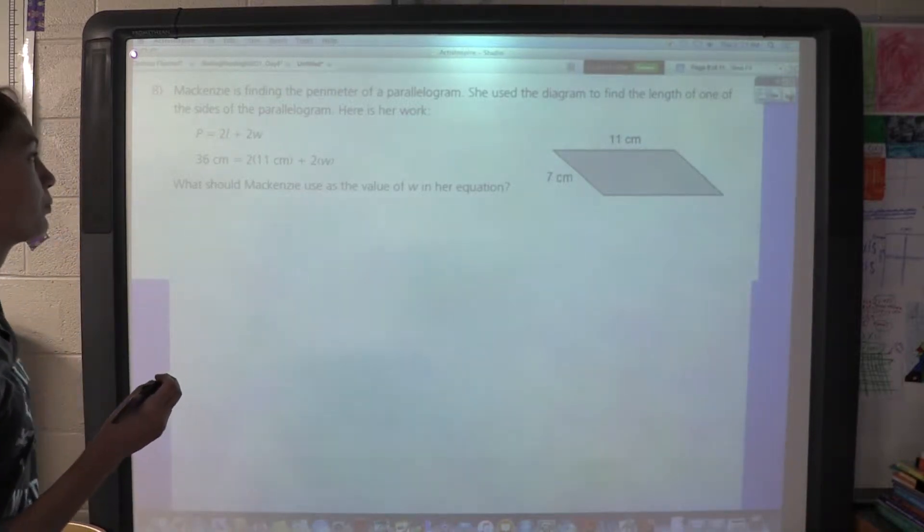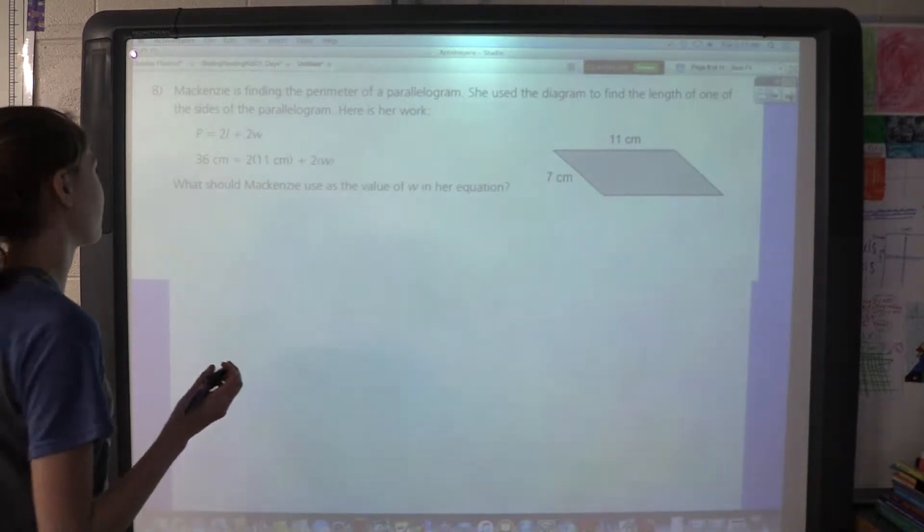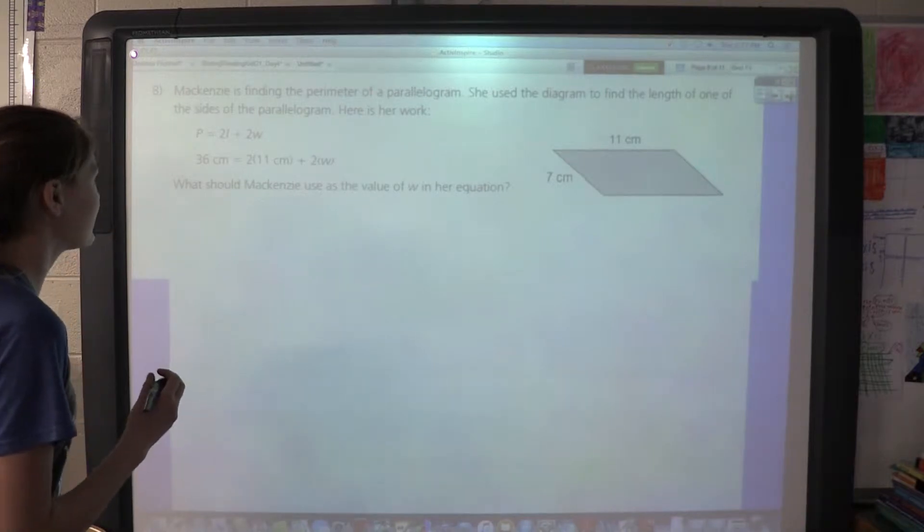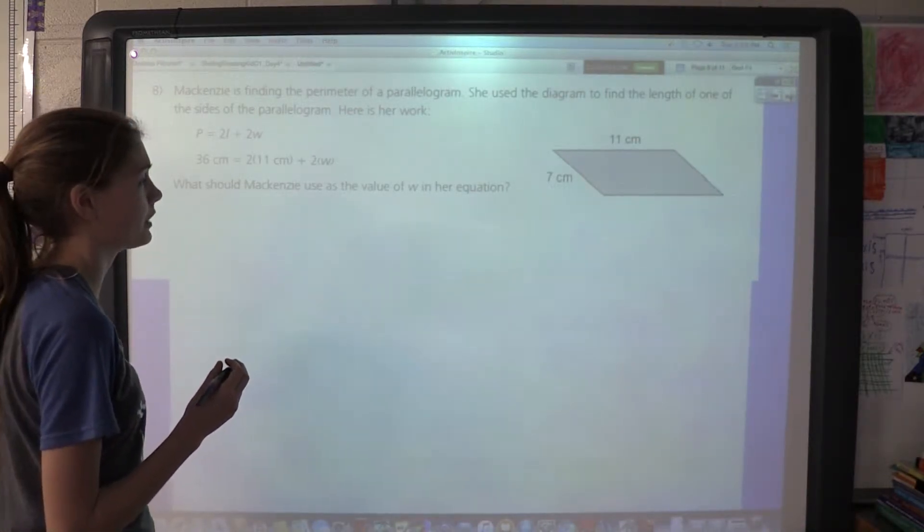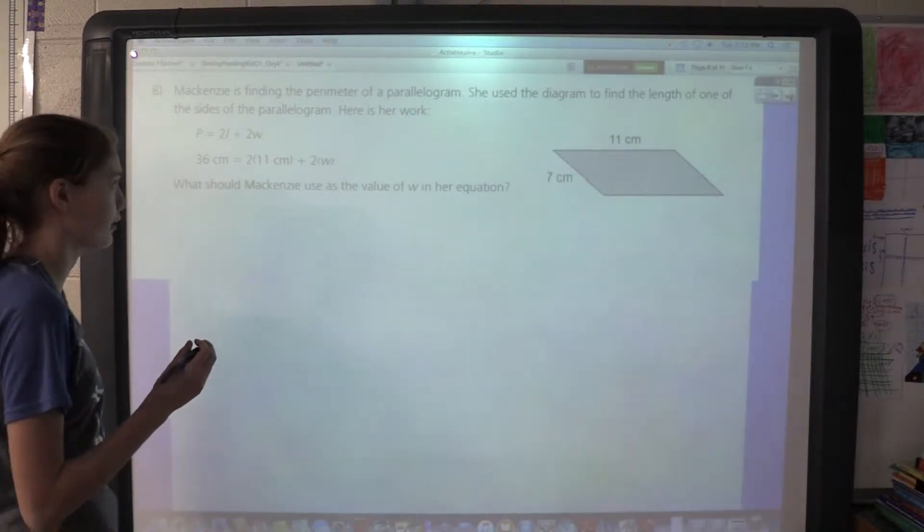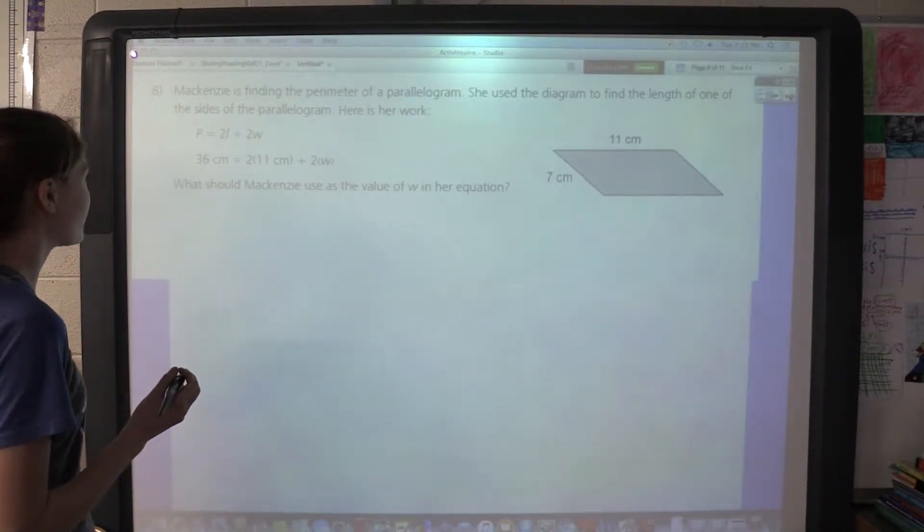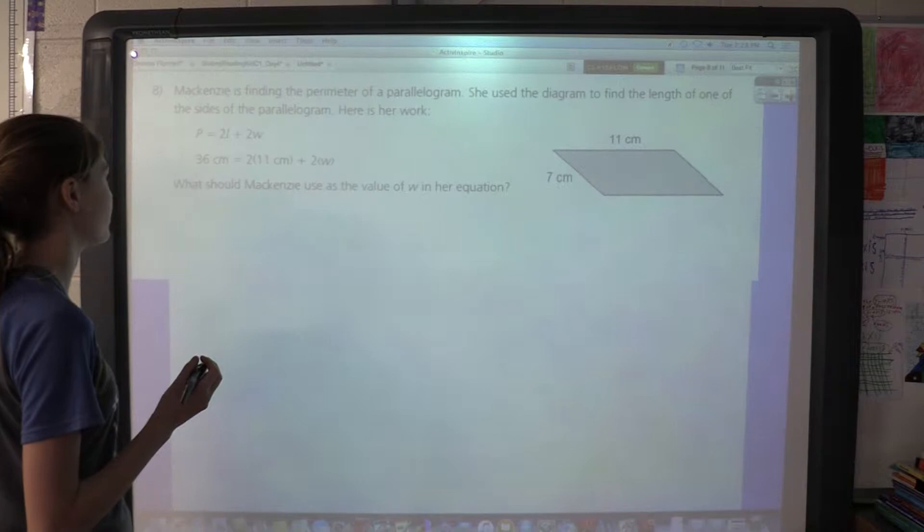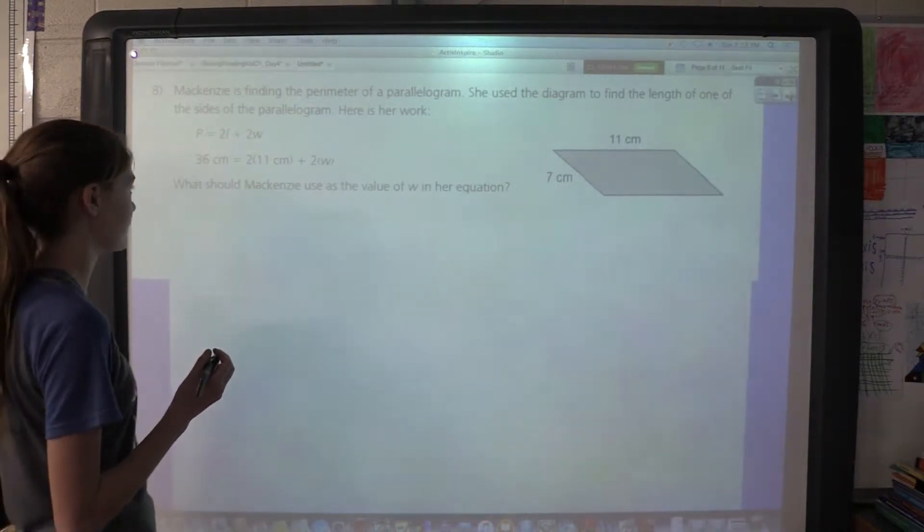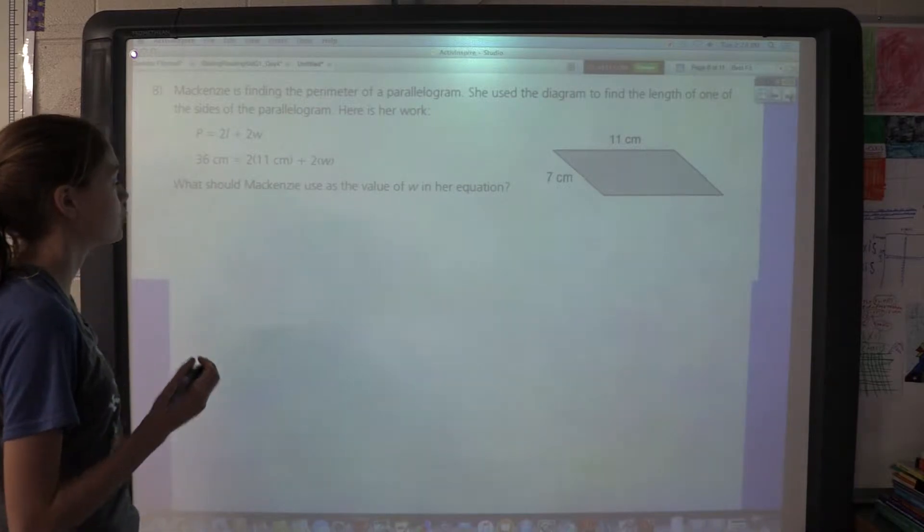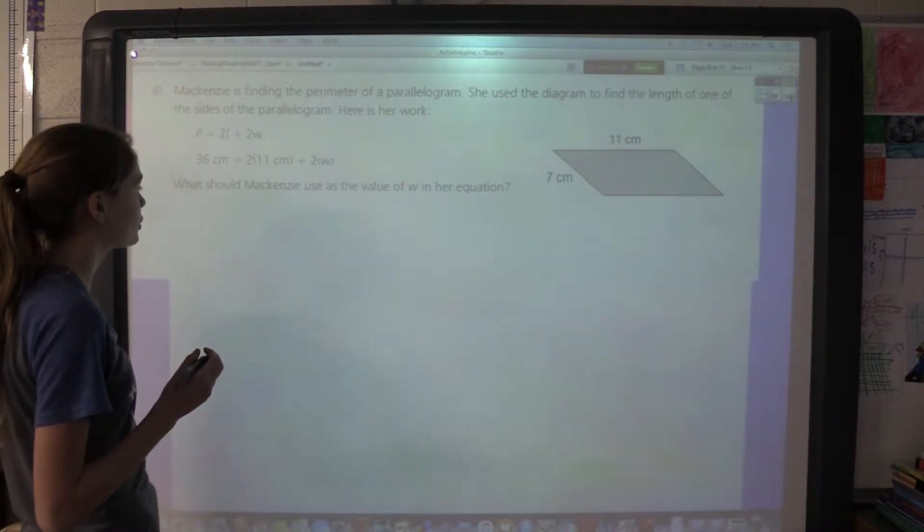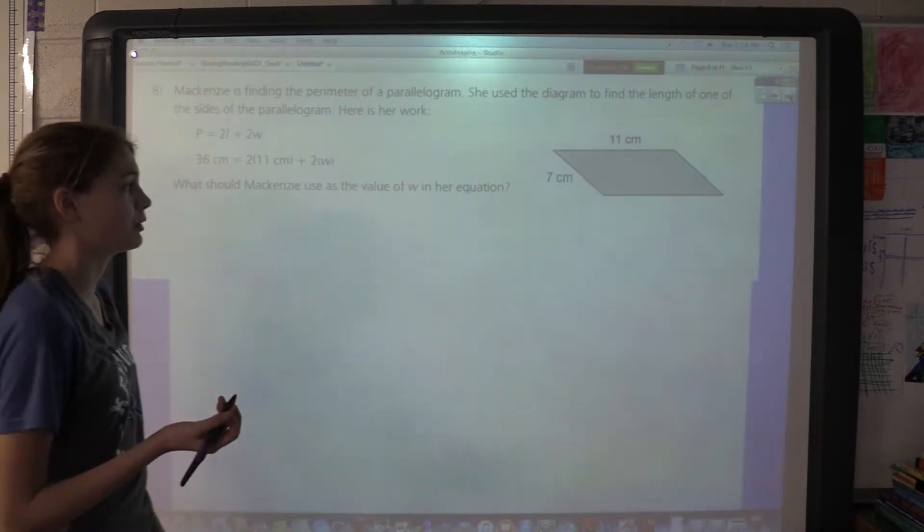Today we're working on this math problem, trying to figure out the perimeter. McKenzie is finding the perimeter of a parallelogram. She used a diagram to find the length of one of the sides of the parallelogram. Here's the work: Perimeter equals 21 plus 2w. 36 centimeters equals 2(11 centimeters) plus 2w. What should McKenzie use as the value of w in her equation?